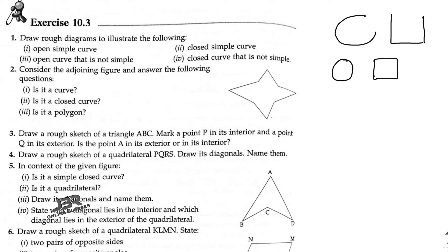Next: not simple — you have to draw a curve that is not simple. You can draw an open curve like this where the curve crosses itself. Last one: closed curve that is not simple. You can draw a curve like this — closed but not simple.